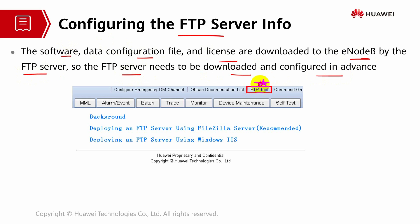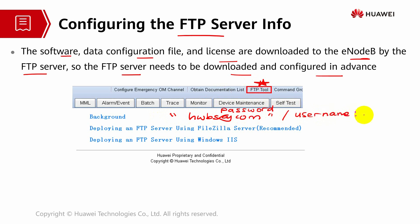This FTP server needs to be downloaded and configured in advance. You can directly download it from the system. It has its own original password: hwbs.com. You can change it to your own password later, and usually the username is standard — we will use 'admin'. This is the first step that needs to be done before the overall commissioning takes place, as part of the preparation. We have to install the FTP server — download and install it first.